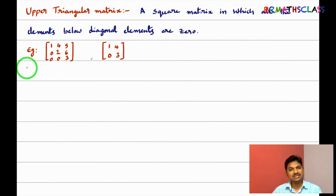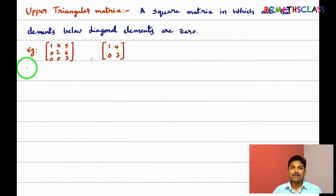Similarly, observe this — this is also a square matrix. What are the diagonal elements? One, three. You observe that all the elements below the diagonal are zero. A square matrix in which all the elements below the diagonal elements are zero is an upper triangular matrix.